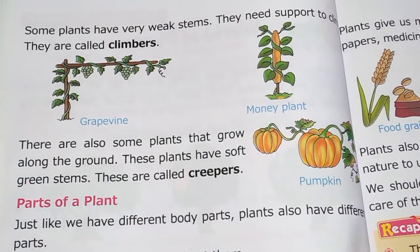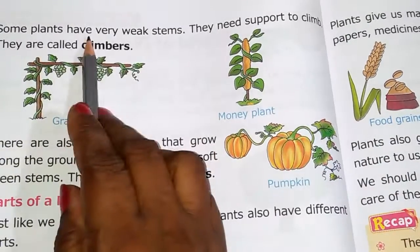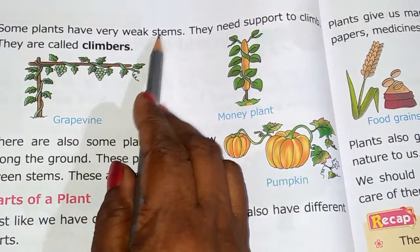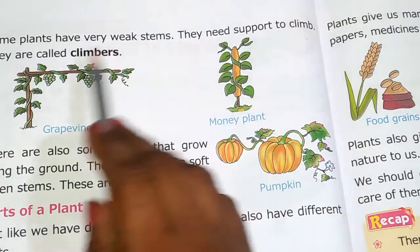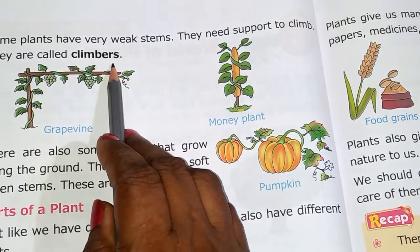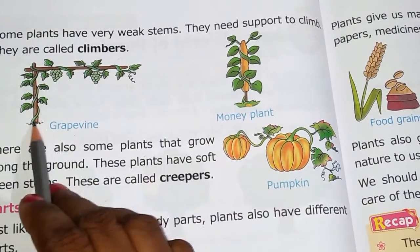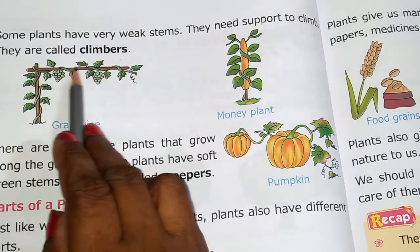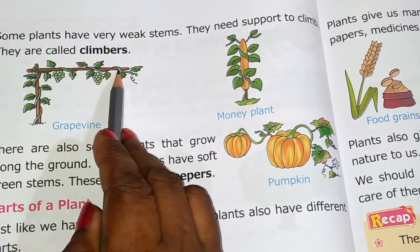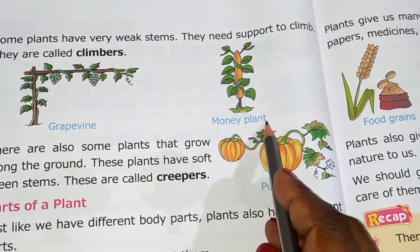Next is climbers. Some plants have very weak stems and they need support to climb. They are known as climbers, like grape vine — it needs the support of any plant or stem to climb. Money plant is another example.